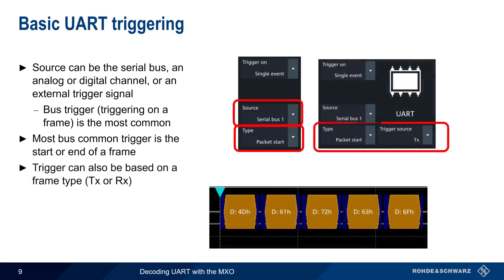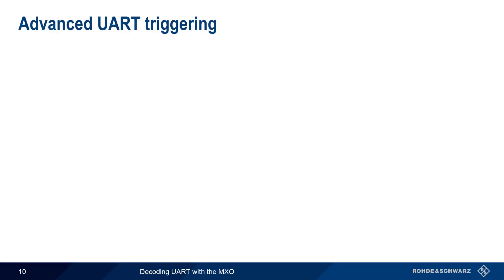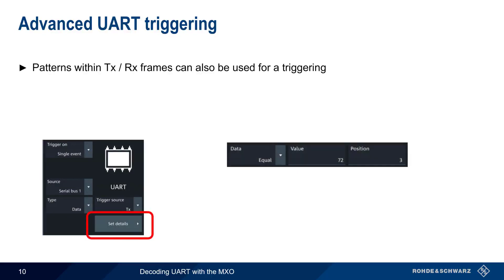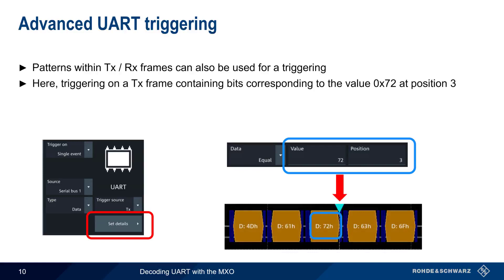For example, we can configure the MXO to trigger — that is, to begin an acquisition — whenever it sees a TX packet. In addition to basic frame triggering, the MXO also supports triggering on patterns within UART frames. This is configured using 'Set Details,' where we can define data patterns, matching criteria, and offsets in order to trigger on frames containing a given pattern at a given location. For example, here the MXO trigger occurs after a TX frame containing data with a value of 0x72 at position 3. In addition to single events, the MXO can also trigger on a sequence of events; please see the user documentation for more details on how to configure a sequence-based trigger.